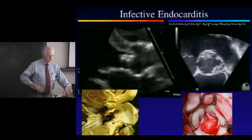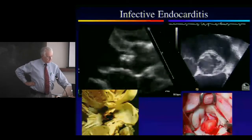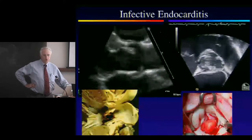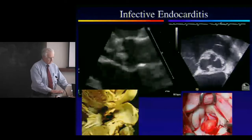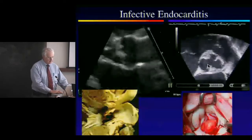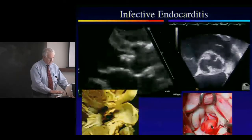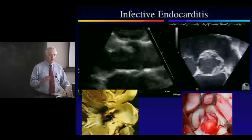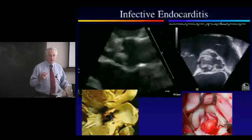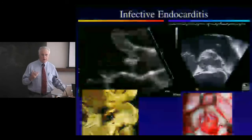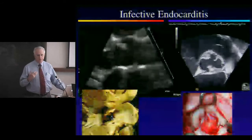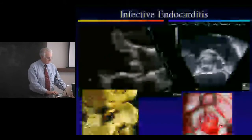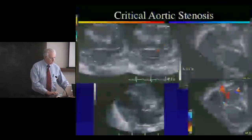Dr. Sanders mentioned infective endocarditis — no talk on echocardiography is adequate without showing a vegetation. Here are examples of vegetations on the valve by echocardiography, and one at the time of surgery. Unfortunately, one patient had a vegetation that eroded through his aortic wall, resulting in an aortic root abscess.